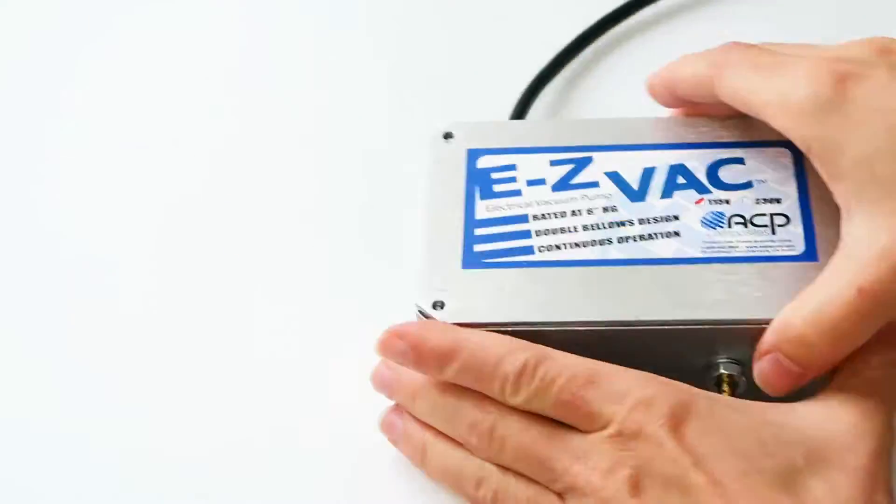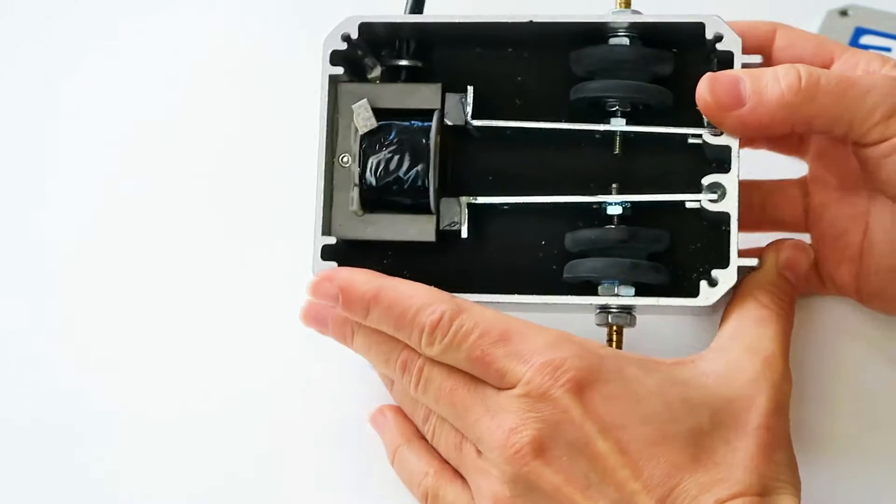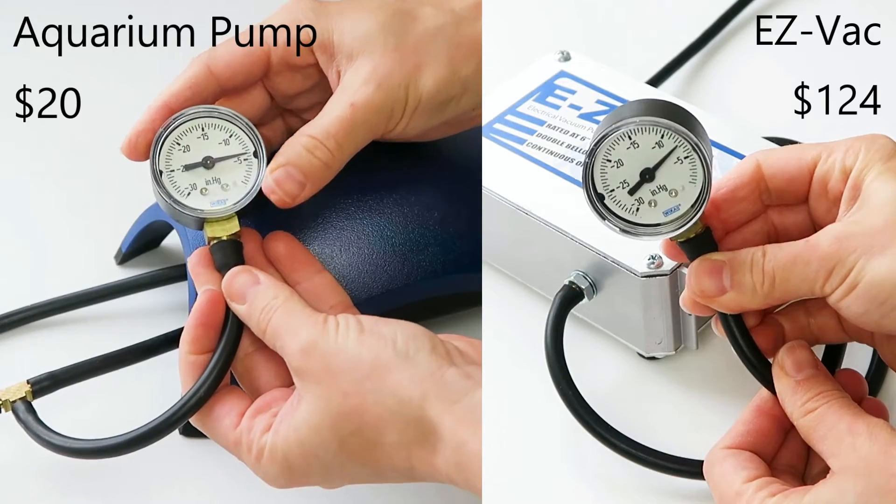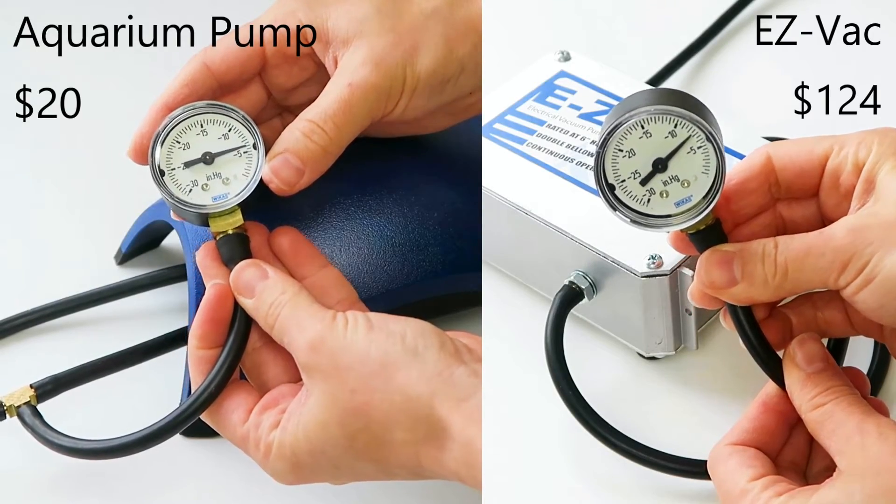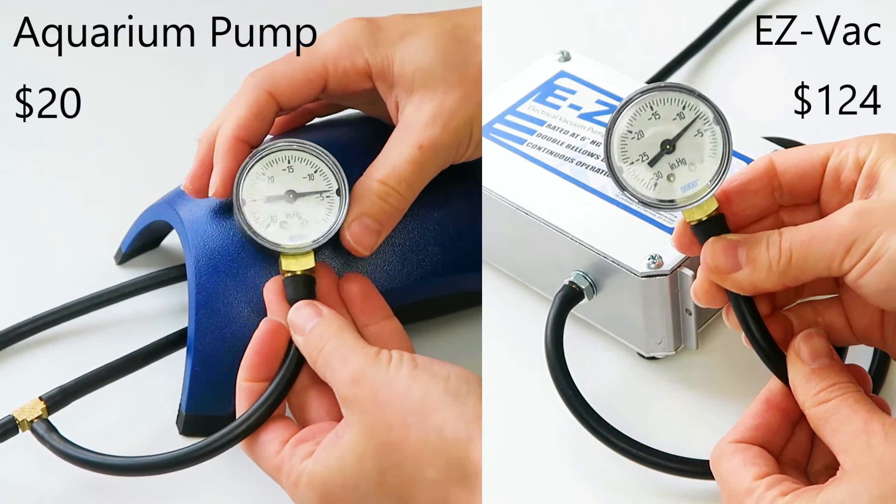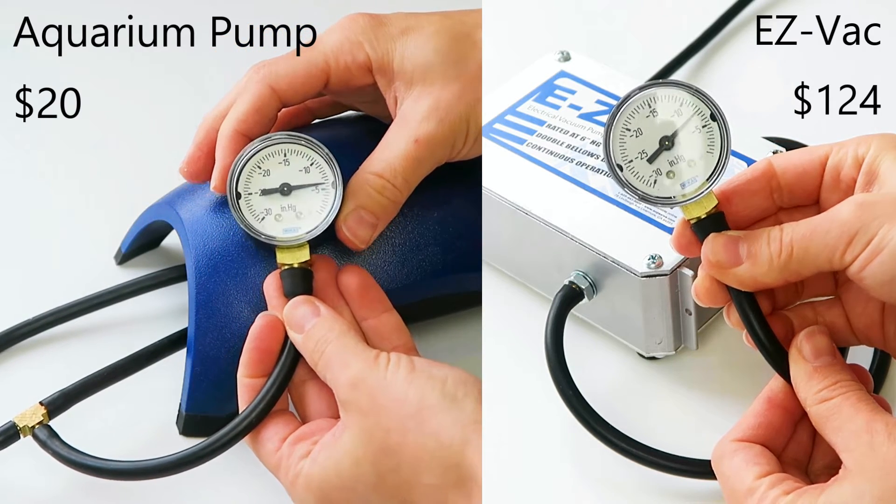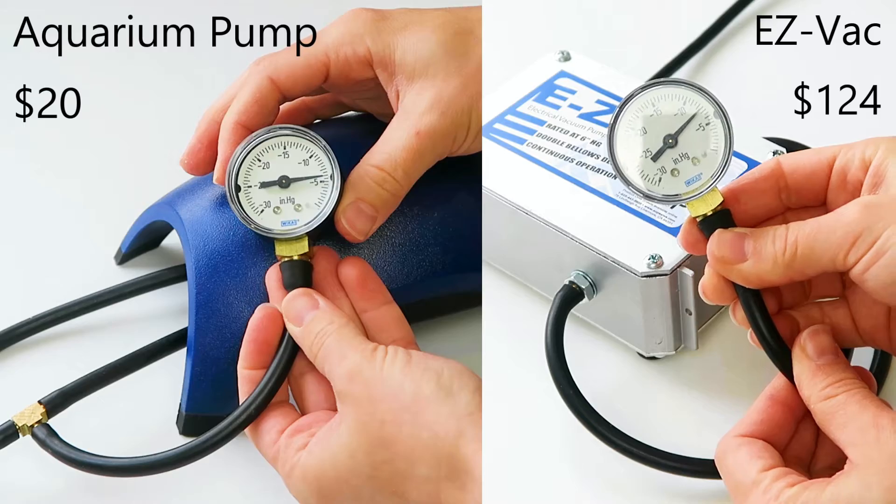For comparison, this is an EZVAC pump from ACP Composites, with the same double bellows design but for about 6 times the price. The aquarium pump provides around 6 inches of mercury versus about 8 on the EZVAC, which in my testing did not affect the final result.